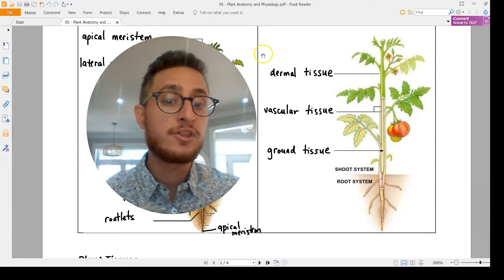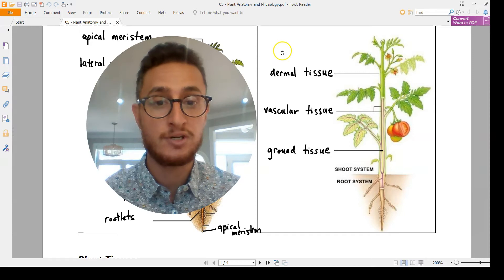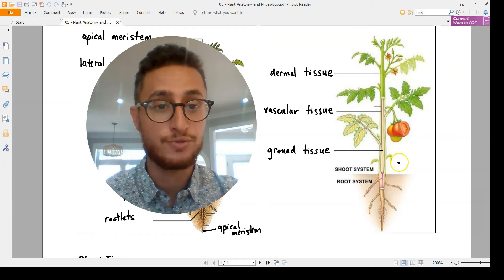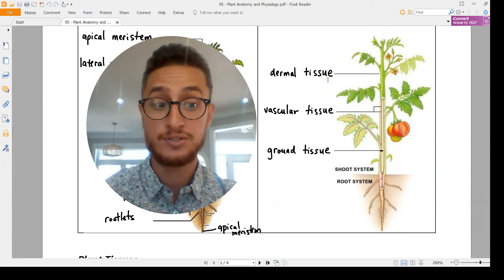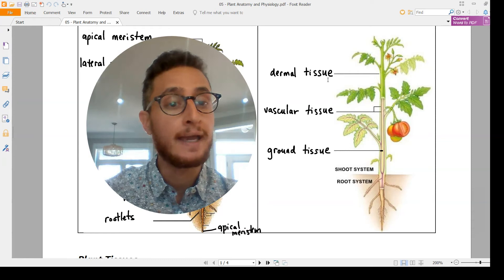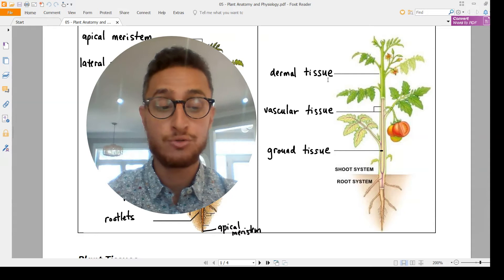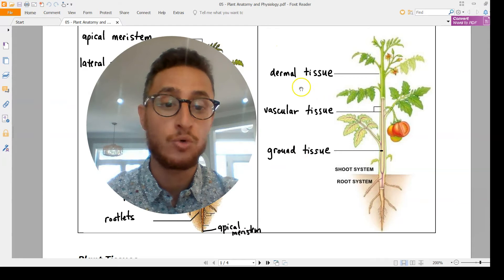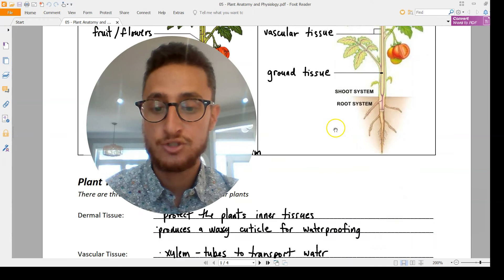That's only the above ground portion. Let's remember there is a tremendously important part of the plant underground, the root system, where it's going to soak up water and absorb nutrients, anchor the plant in the soil, and hold the topsoil in place. Without those roots, we wouldn't have nearly as much topsoil.